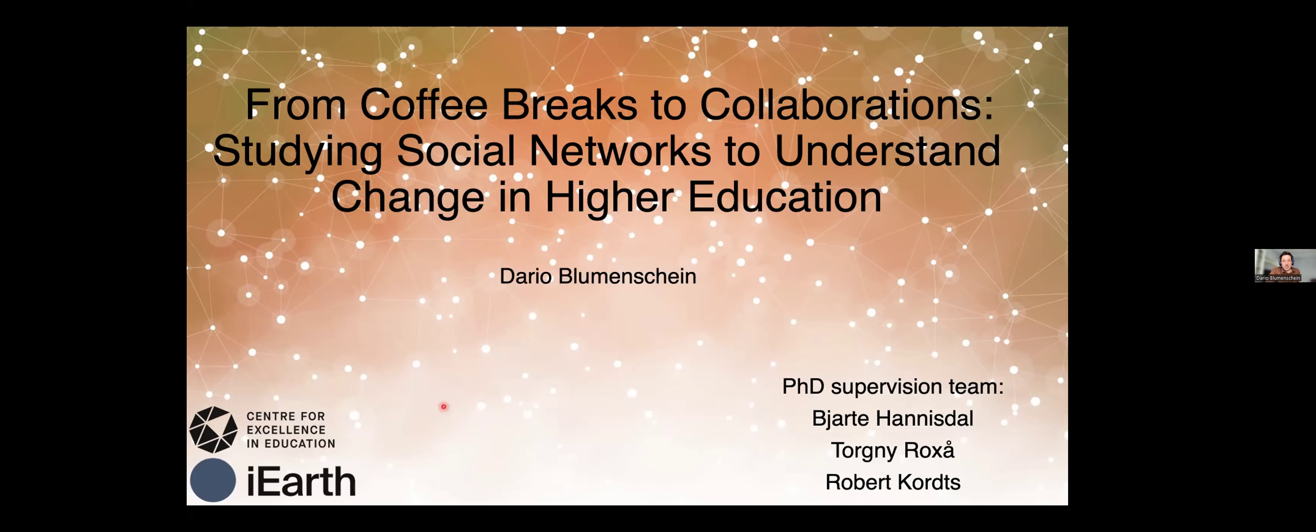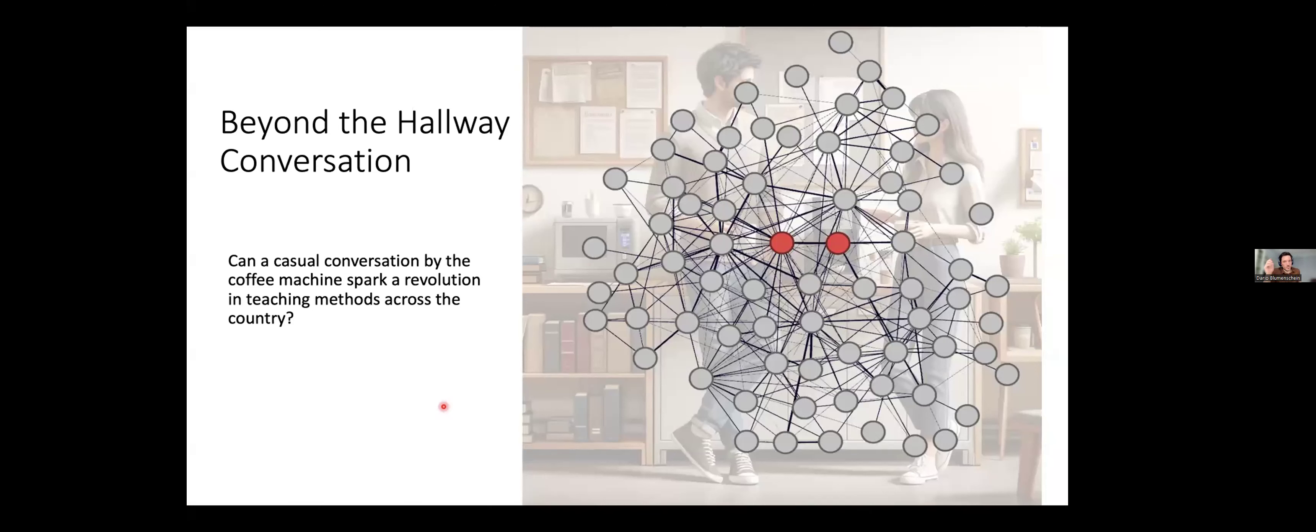In the invitation to the DLF, we mentioned this question: can a casual conversation by the coffee machine spark a revolution in teaching methods across the country? I don't know if I'm going to be able to answer that question, but at least I hope it's going to help us think differently about social interactions, about social networks that we develop as part of something that seems as everyday and mundane as a conversation by a coffee machine, and how something like that can actually have large scale influence potentially. To have this discussion, we need to talk about two things: what is change and how does it happen, and what are social networks and how are social interactions influencing change.